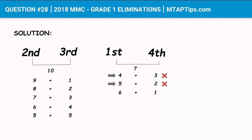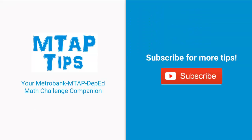Now let's look at the third option: six and one. If the first monkey ate six bananas, could the second and third monkey have eaten nine and one? No, nine is still more than six. Same with eight and two, seven and three, and six and four — six is equal, not less. But if we look at the last option, five and five, this tells us that six bananas for the first monkey is correct, which also gives us the answer: one banana for the fourth monkey.